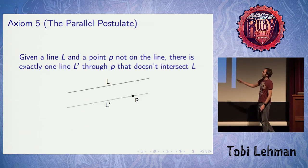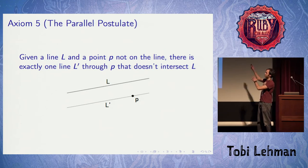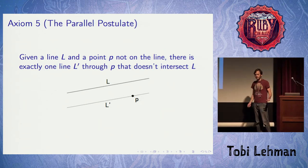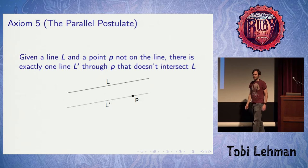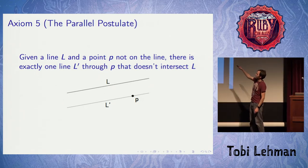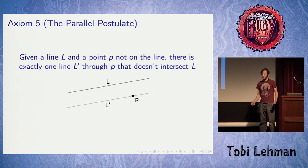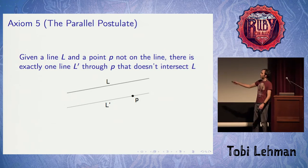Finally, this one is the point of divergence from more modern theories of space. It's sometimes called the parallel postulate. It states that given any line and a point not on that line, there's exactly one other line that runs through it that doesn't intersect the original line. That's what we're going to take as the definition of parallel, and that's a very special property we'll be using later.